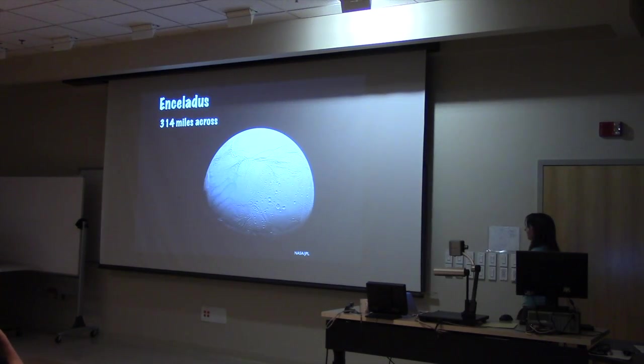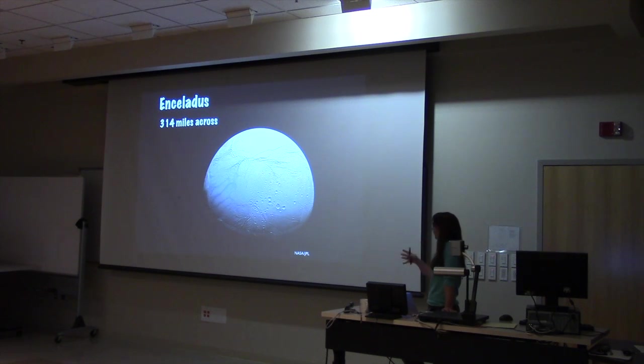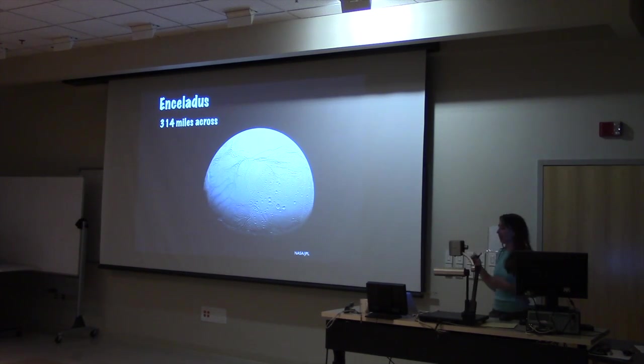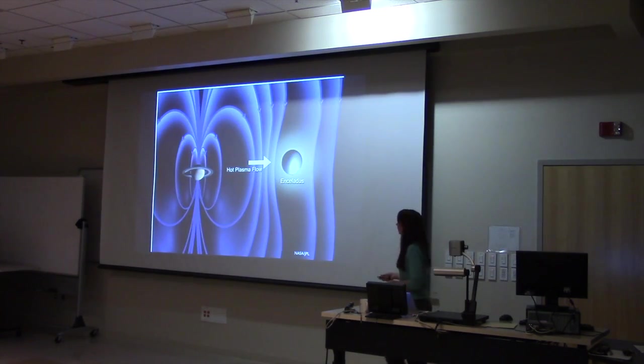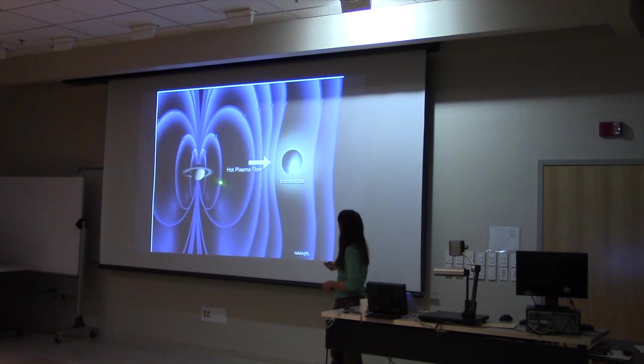This, Enceladus, is another moon of Saturn. And before Cassini, it was interesting because of its incredible brightness and smoothness. Enceladus is pretty much as white as freshly fallen snow. It's one of the whitest objects in the solar system. And the surface, compared to the other moons of similar size, is not very cratered. There are some craters, but not too many. But we really didn't know much else about it.